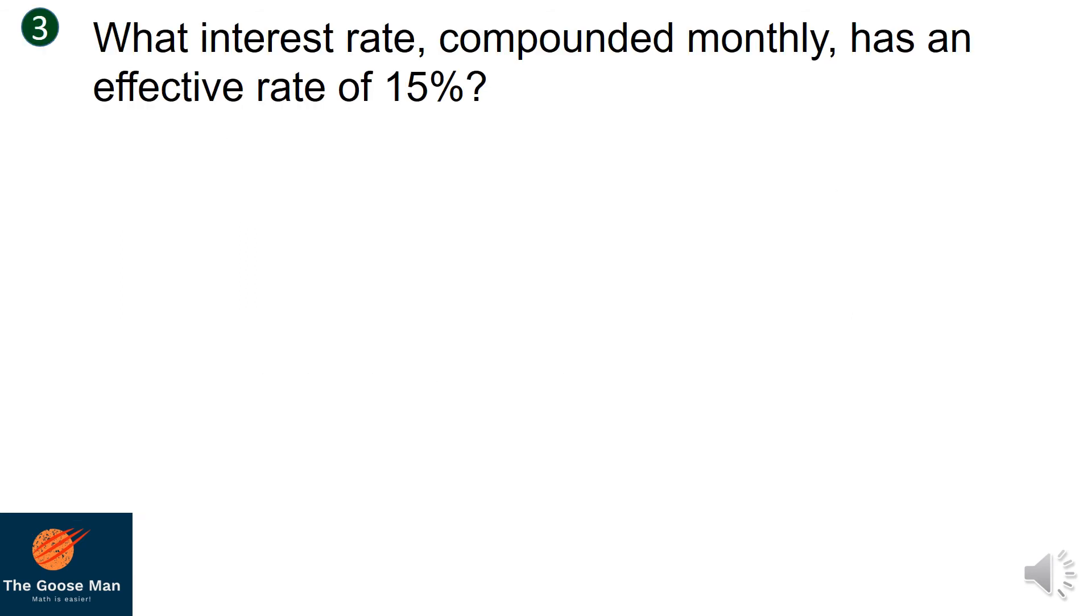Let us consider this as a third example. This time, the effective annual interest rate is given, and we want to find out the nominal rate. Let's start from the given such that the effective annual rate equals 15%, and the frequency equals 12.